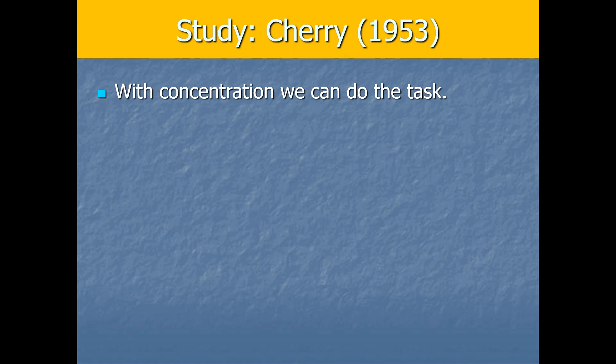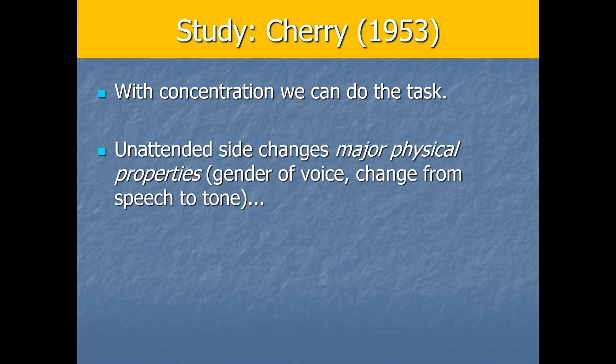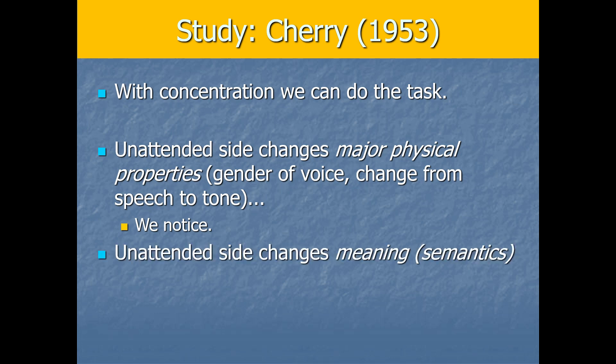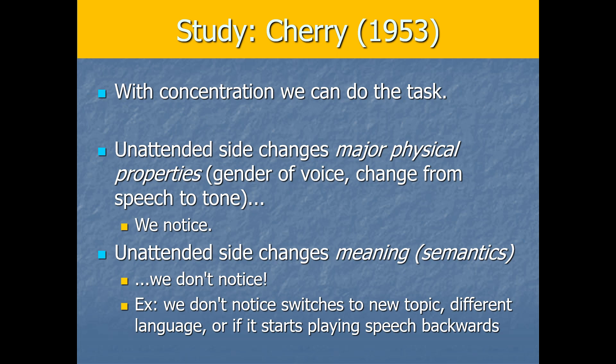Cherry manipulated elements of the unattended side as independent variables. For example, he tried changing major physical properties like the gender of the voice, or switching from someone speaking to just playing a tone. People did notice that something had changed on the unattended side even though they had no idea what was being spoken there. But in other conditions, he changed the meaning or semantics — like what was being talked about — and in this case people had no idea. People didn't notice if the unattended side switched to a completely new topic, a different language entirely, or even if the speech was played backwards.